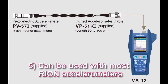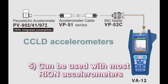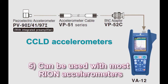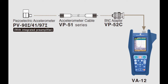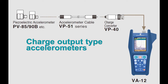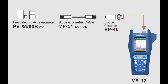Feature five: The VA-12 can be used with most Rion accelerometers. CC-LD accelerometers with integrated preamplifiers can be connected using a BNC adapter. Charge output type accelerometers can be connected using a VP40 charge converter.